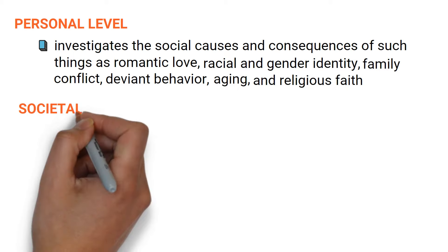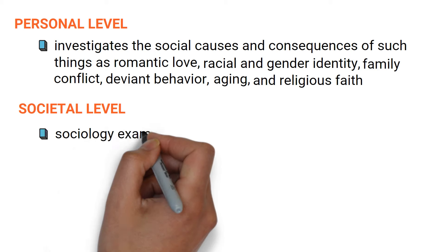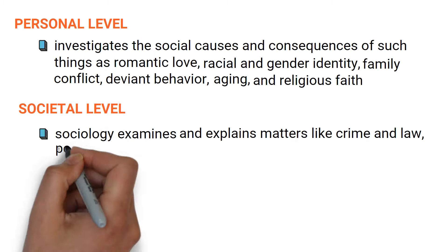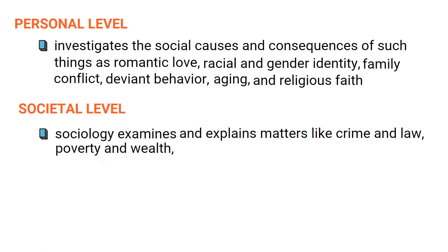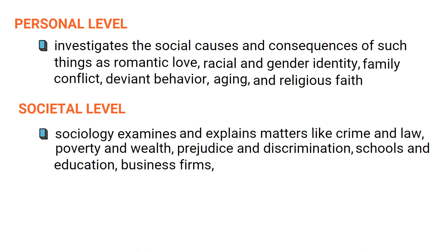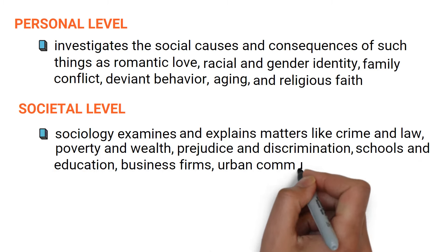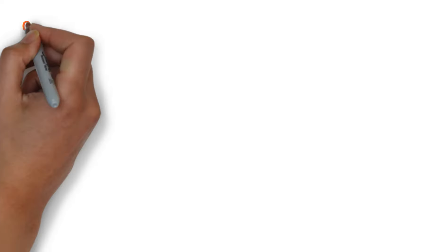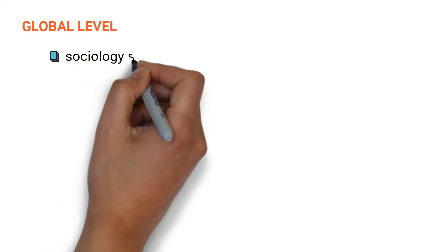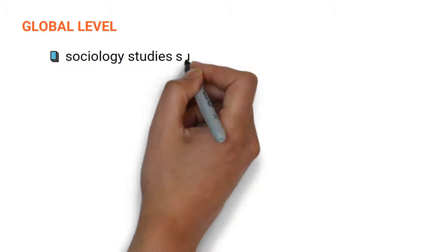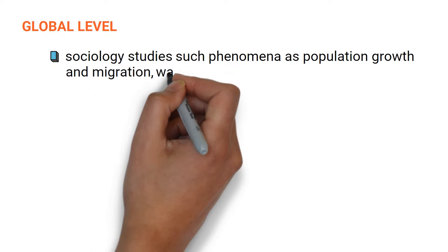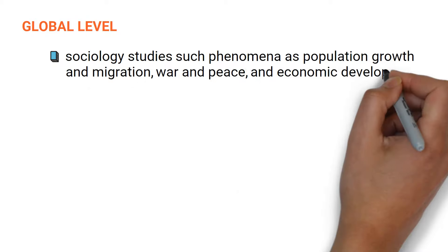At the societal level, sociology examines and explains matters like crime and law, poverty and wealth, prejudice and discrimination, schools and education, business firms, urban community, and social movements. At the global level, sociology studies such phenomena as population growth and migration, war and peace, and economic development.